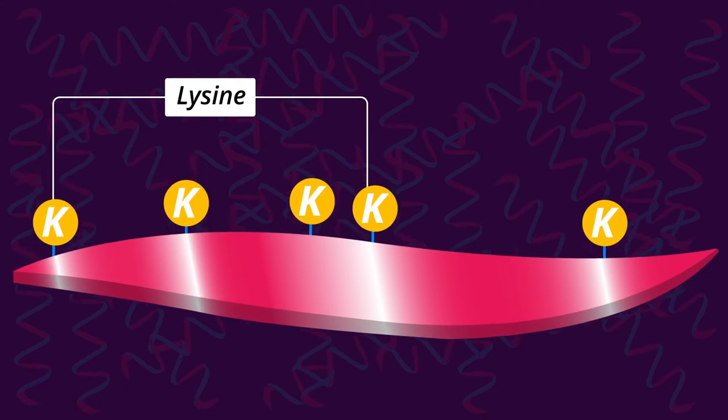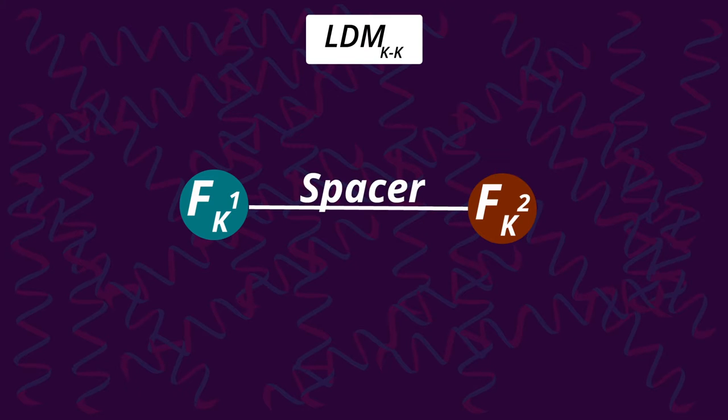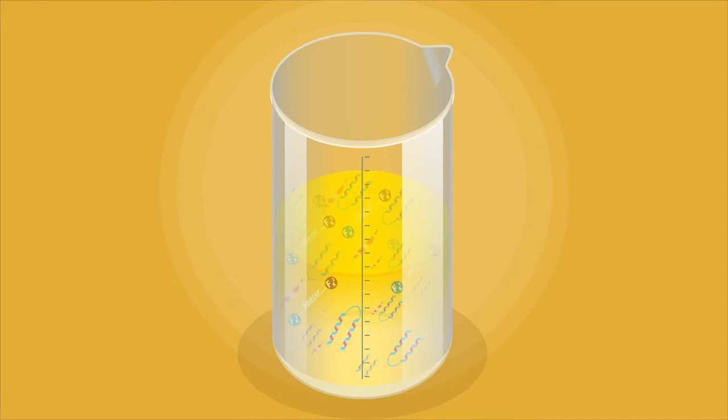To begin with, the scientists designed a custom reagent composed of segments called FK1 and FK2, which were separated by a spacer. This reagent was then mixed with a solution containing the target protein.